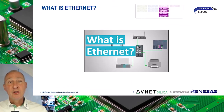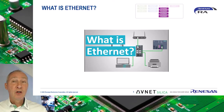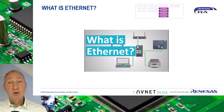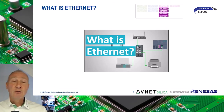So what is Ethernet? Well, according to Wikipedia, Ethernet is a family of wired computer networking technologies commonly used in local area networks, or LAN, and it was commercially introduced in 1980. Over the course of its history, Ethernet data transfer rates have increased from the original 2.94 megabits per second to the latest 400 gigabits per second transfer rate.